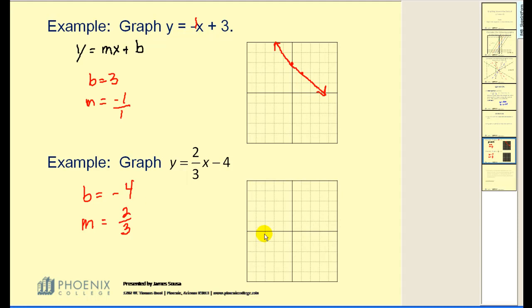We plot the y-intercept. Use the slope to find additional points. Up 2, right 3. Our line passes through those two points.